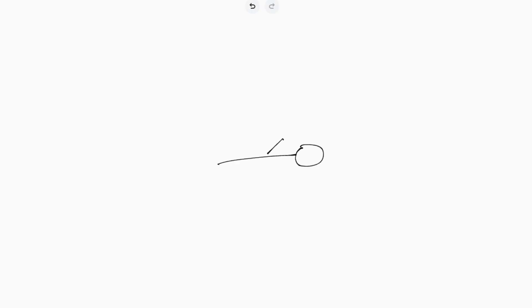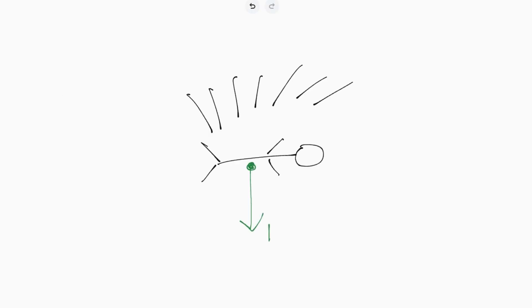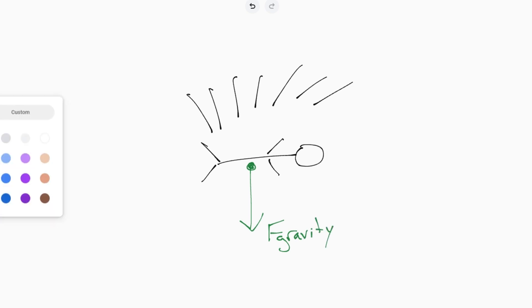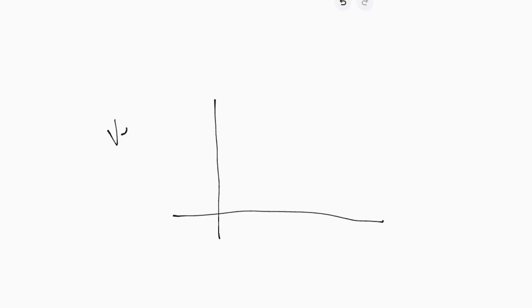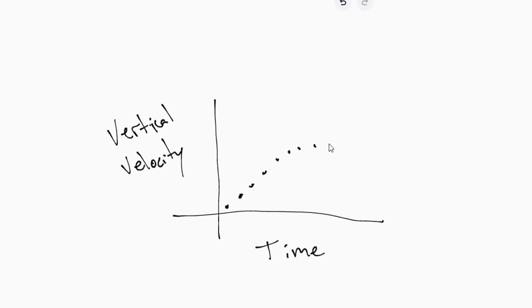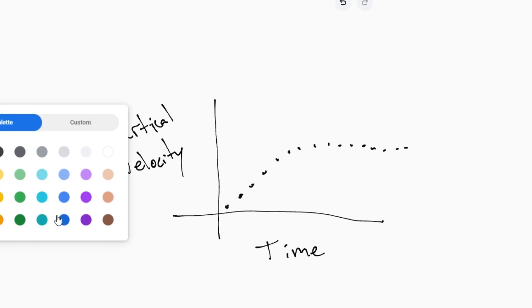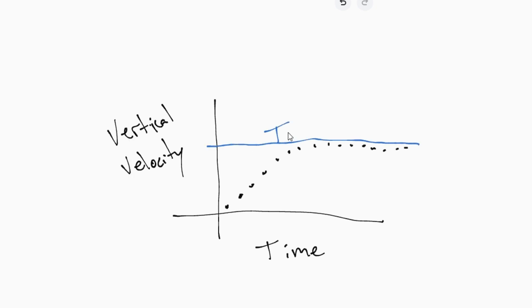When you go skydiving, you don't just keep accelerating faster and faster towards the ground the entire time. In fact, very quickly, the force of gravity going down is balanced by a force of air resistance pushing up. You can actually graph your vertical velocity versus time, and in just the first few seconds after you jump out of an airplane, your vertical velocity gets faster and faster but eventually levels off — and you reach this maximum speed we call your terminal velocity.